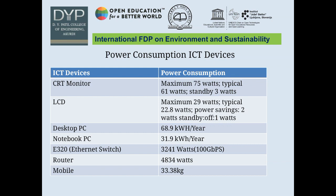The power consumption of ICT devices is shown in a table. A CRT monitor consumes a maximum of 75 watts, or 3 watts in standby mode. An LCD consumes a maximum of 29 watts, or 1 watt in power-saving mode. A desktop PC uses 68.9 kWh. A notebook PC uses 31.9. An Ethernet switch, when off at 100 Gbps, takes 3241 watts. A router takes 4834 watts. A mobile phone emits 33.38 kg of CO2.